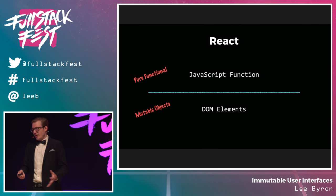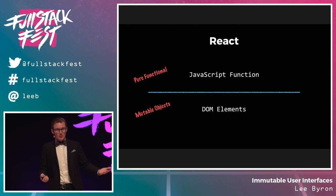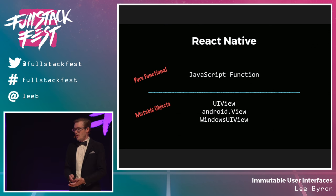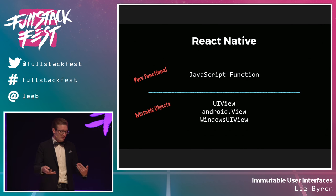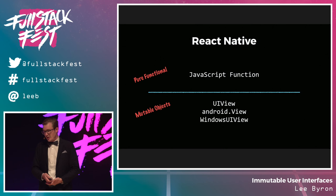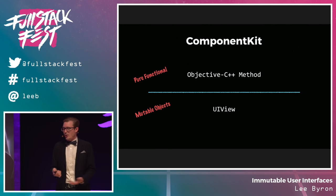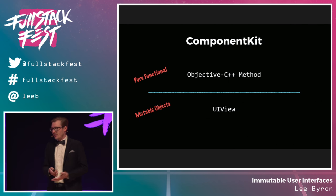Components are a really important aspect of this architecture. React is an excellent library that implements this concept — it lets you write pure JavaScript functions and manages the mutable DOM elements underneath. For native apps, React Native lets you write these component functions using the same React API in JavaScript, but bridges down to UIKit on iOS, Android views on Android, and even Windows UI views. There's also ComponentKit — the same idea implemented entirely in Objective-C++, managing underlying UI views for you.